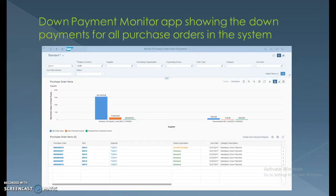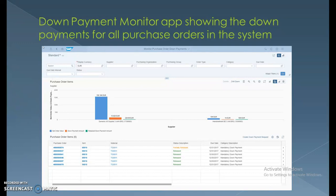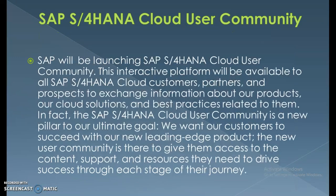The Down Payment Monitor app displays all purchase orders in the system. For example, filtering by currency type Euro shows all payment processes to be executed. Status descriptions show whether a payment is released or partially released, making it easy to identify the status of down payments for customers or clients.